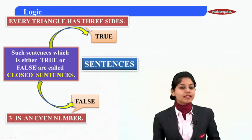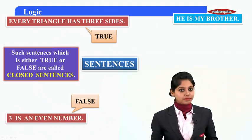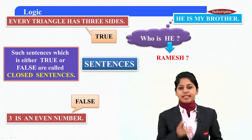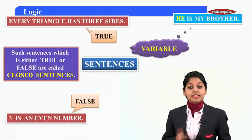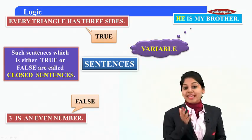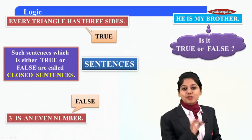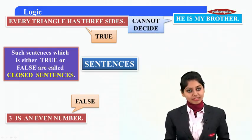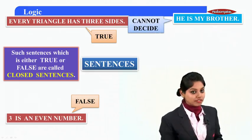Now here is another example: he is my brother. Who is 'he'? He can be Ramesh, he can be Suresh, or he can be anyone. That simply says 'he' is a variable — he can change its value. So if I ask you whether this sentence is true or false, you absolutely cannot decide, because you do not know who 'he' is.